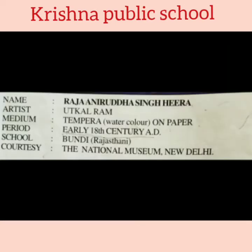Firstly we will see its presentation points. Value points: Name - Raja Aniruddha Singh Hira, Artist - Utkal Ram, Medium - tempera watercolor on paper, Period - early 18th century AD, School - Boondi.